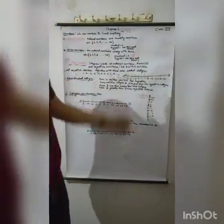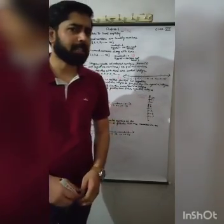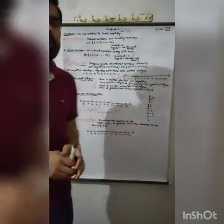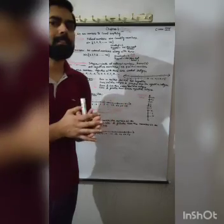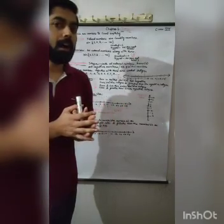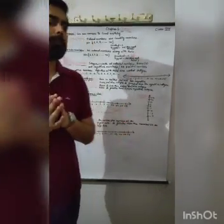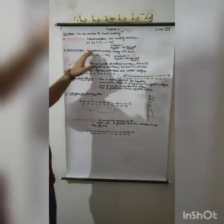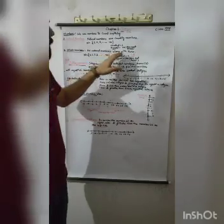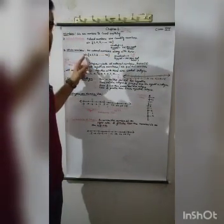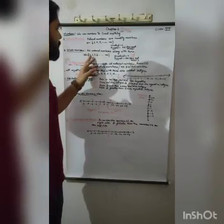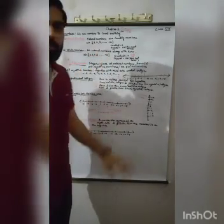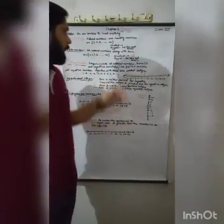When we include 0 in the set of natural numbers, we get another type of number, and that is called a whole number. Whole numbers are all natural numbers along with 0. Whole numbers are always denoted by capital W, and the set is: 0, 1, 2, 3, and so on up to infinity.